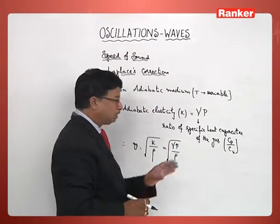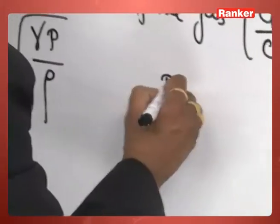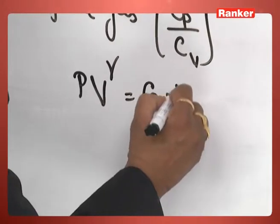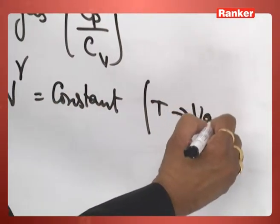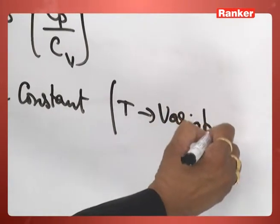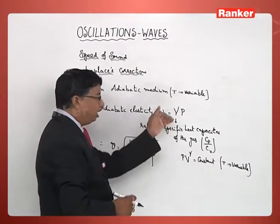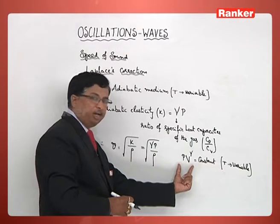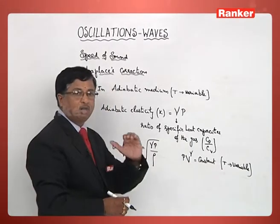How to get gamma P? P V to the power gamma equals constant - that's Boyle's law when temperature is a variable. The way in which we have derived an expression for the value of K in isothermal material medium, similarly, by differentiating this, you can prove that K equals gamma P.